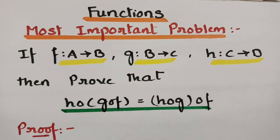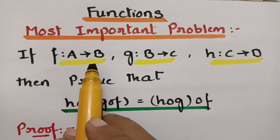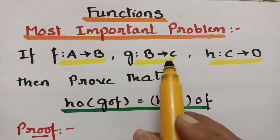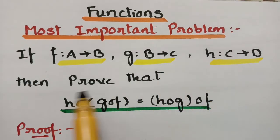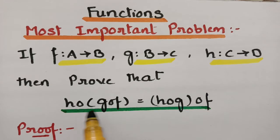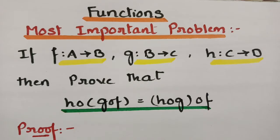Now let's get started to solve the most important problem today from the topic of functions. This is related to MFCS, DMS, and DMGT. In this problem, what is given? If F maps from A to B, G maps from B to C, and H maps from C to D, then we have to prove that H∘(G∘F) is equal to (H∘G)∘F.